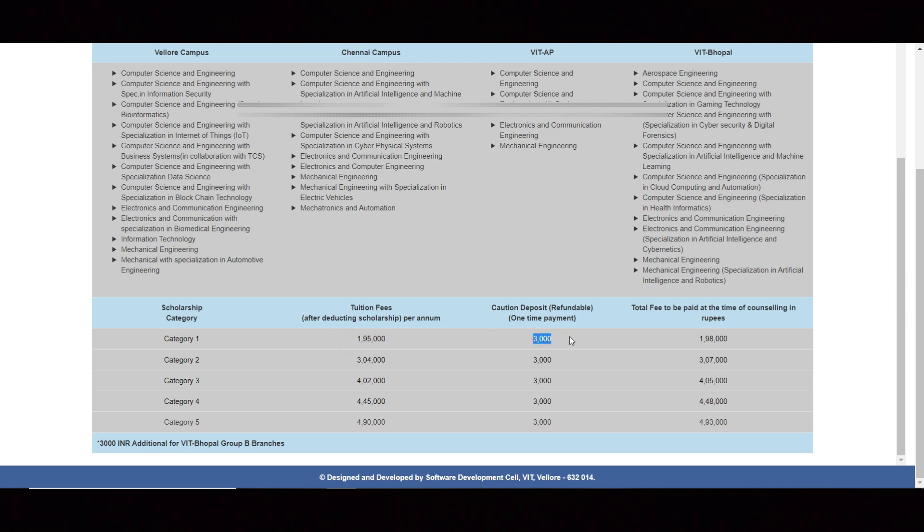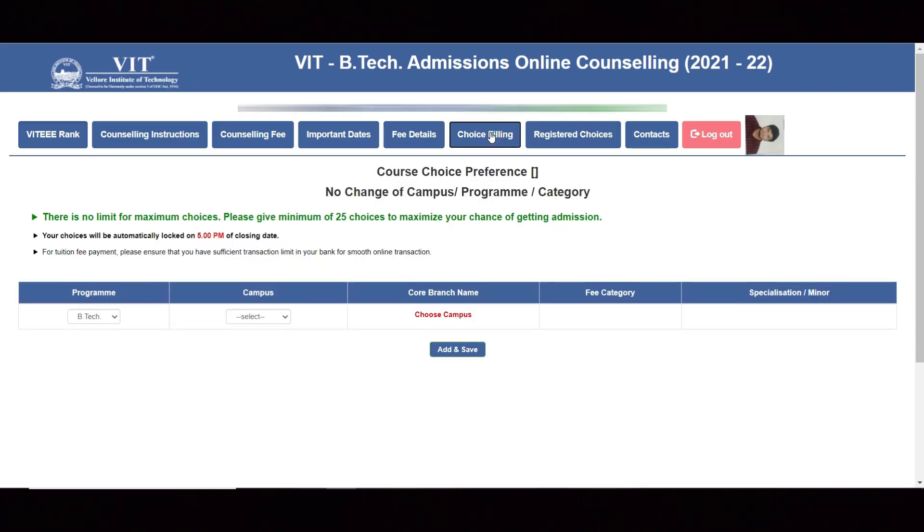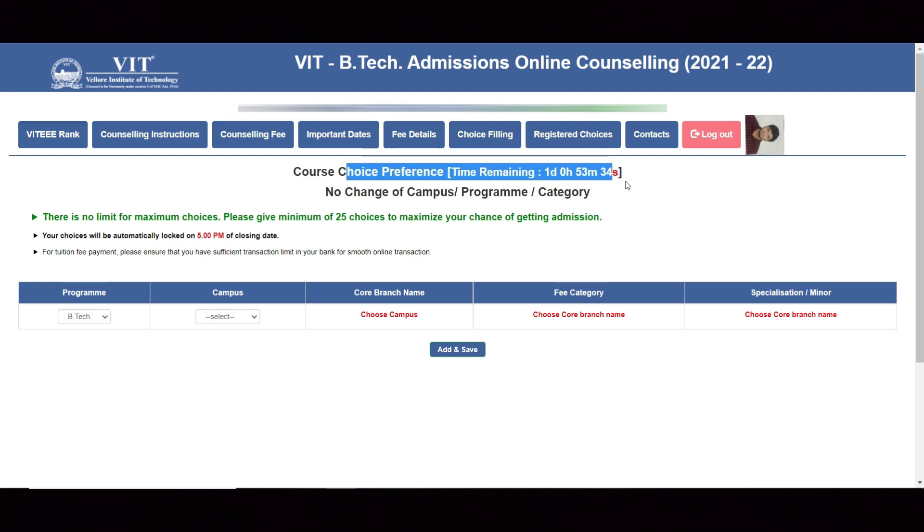Now let me show you choice filling. This is the most important thing many of you requested. There is time remaining - this is one of the best features. You can see exactly one day 53 minutes, that is tomorrow 5pm. Once locked you can't edit it.